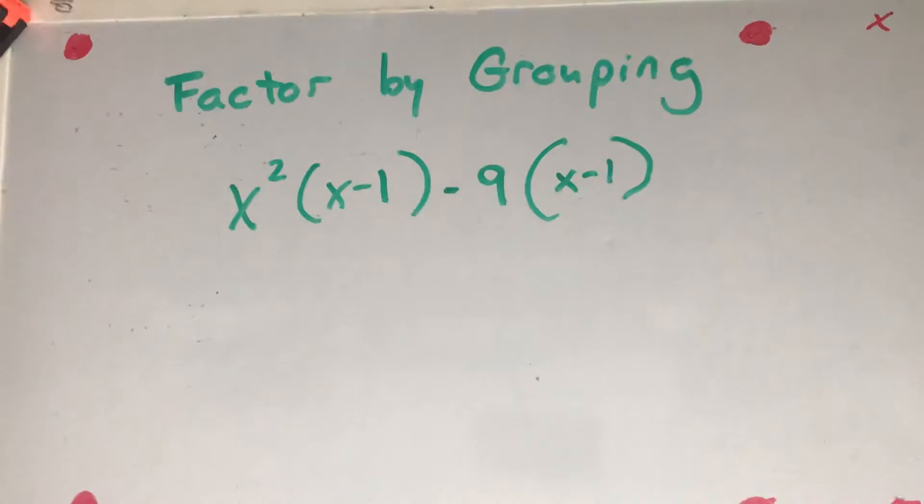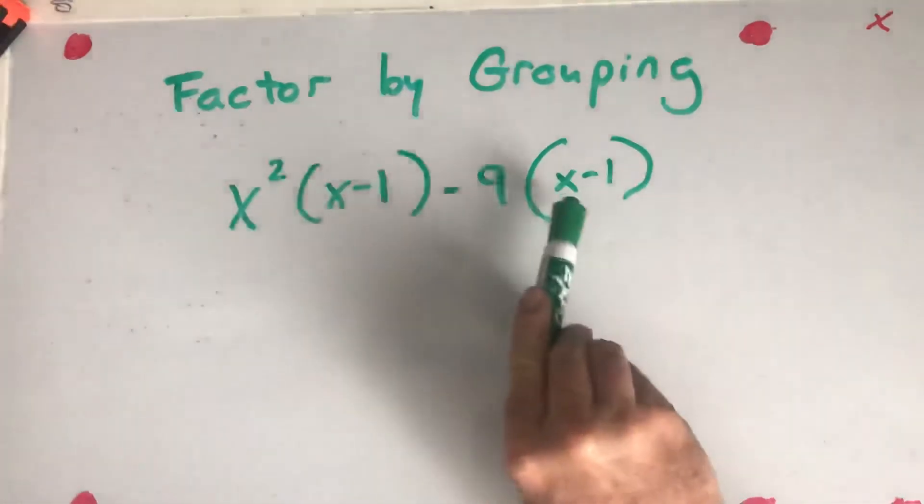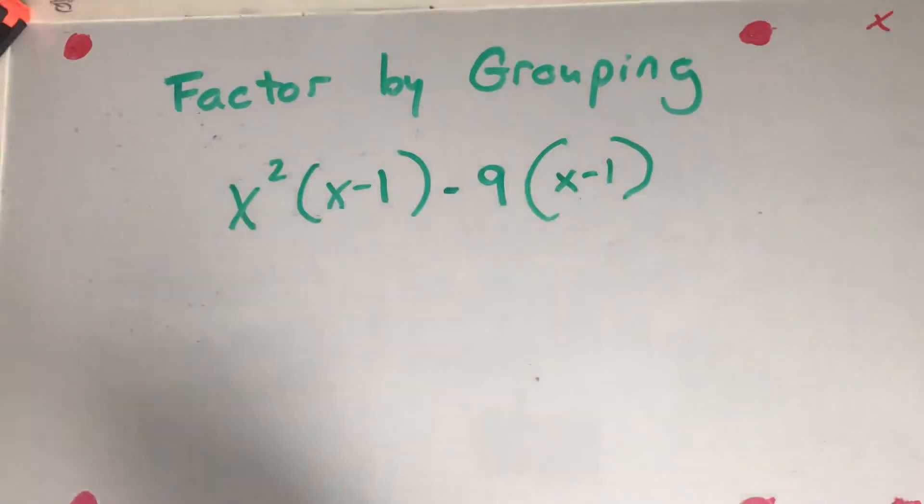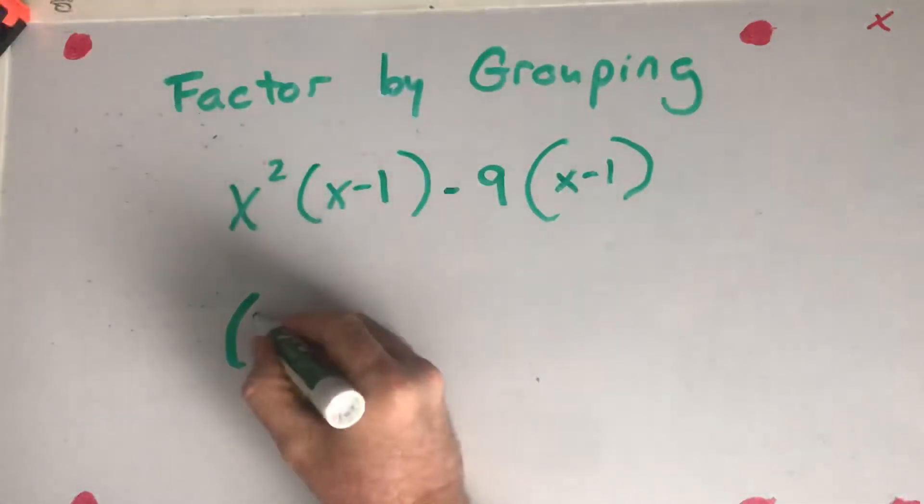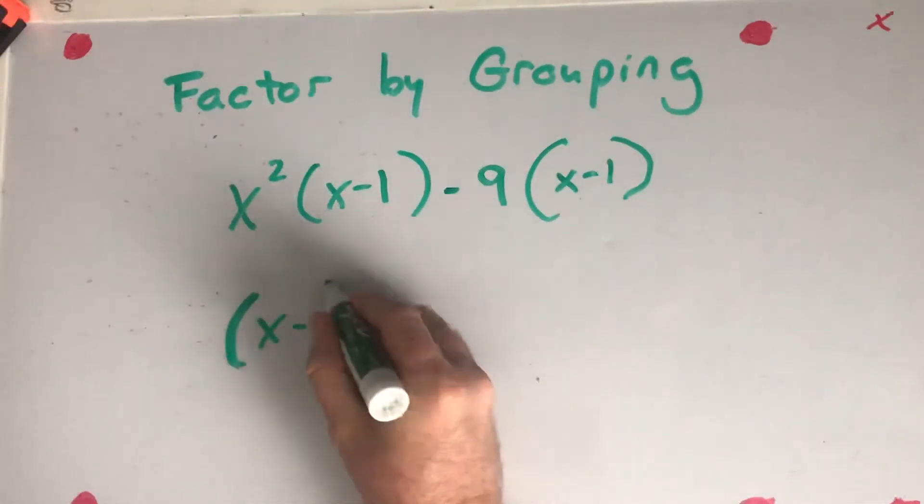What I first want you to recognize is that you have an (x minus 1) and an (x minus 1). So if I factored, this is already factored for me, just so you know. I can take out an (x minus 1).